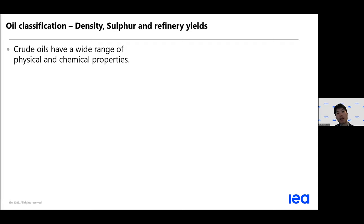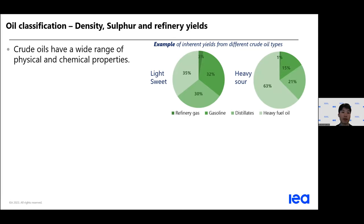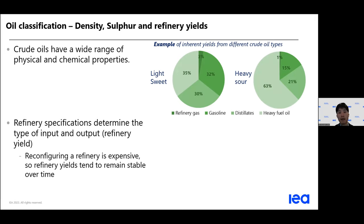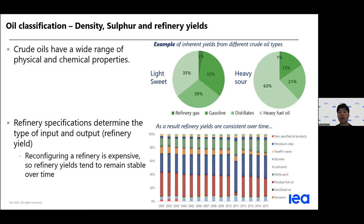Crude oils have a wide range of physical and chemical properties. The two pie charts here show that depending on whether the crude oil is light or heavy, sweet or sour, it tends to have a different composition. It is also worth mentioning that the refinery specification determines the type of input and output of refinery yields. Reconfiguring a refinery is expensive and not always the economical option, so we expect to see stable refinery output from one refinery plant or from a national perspective.